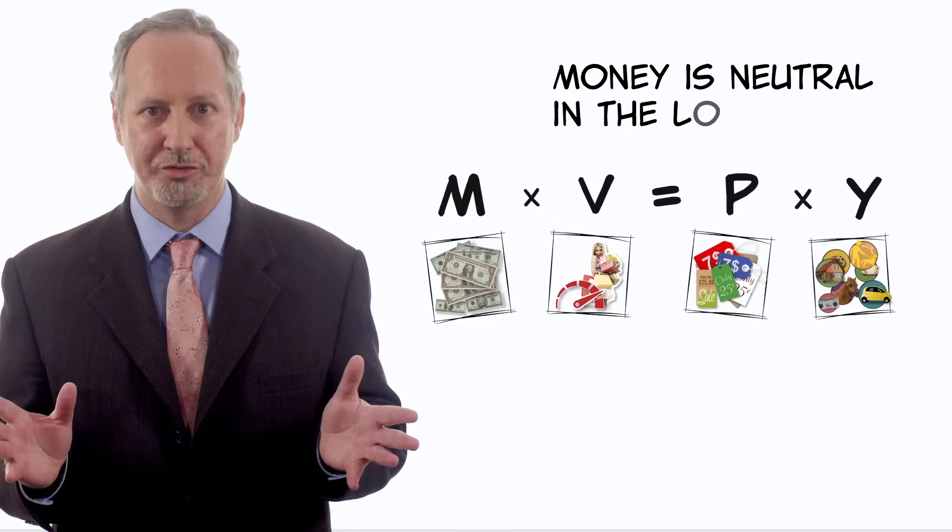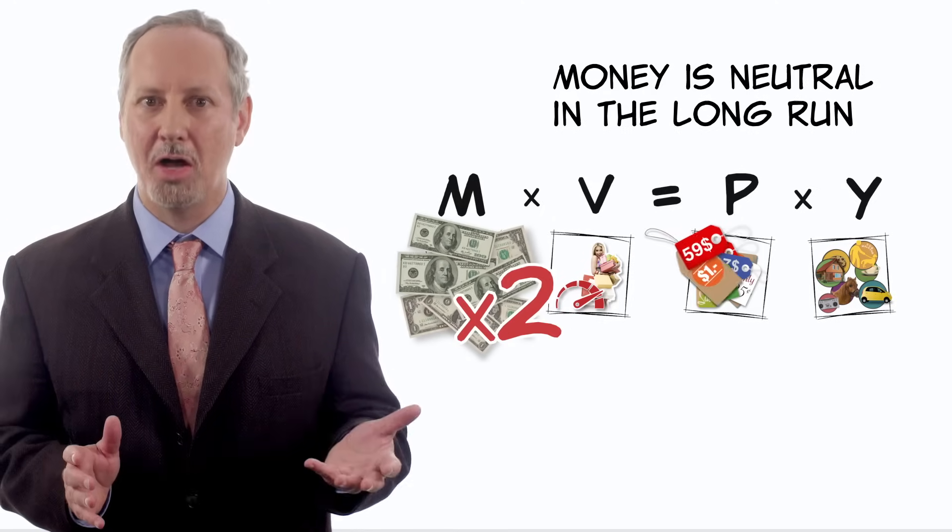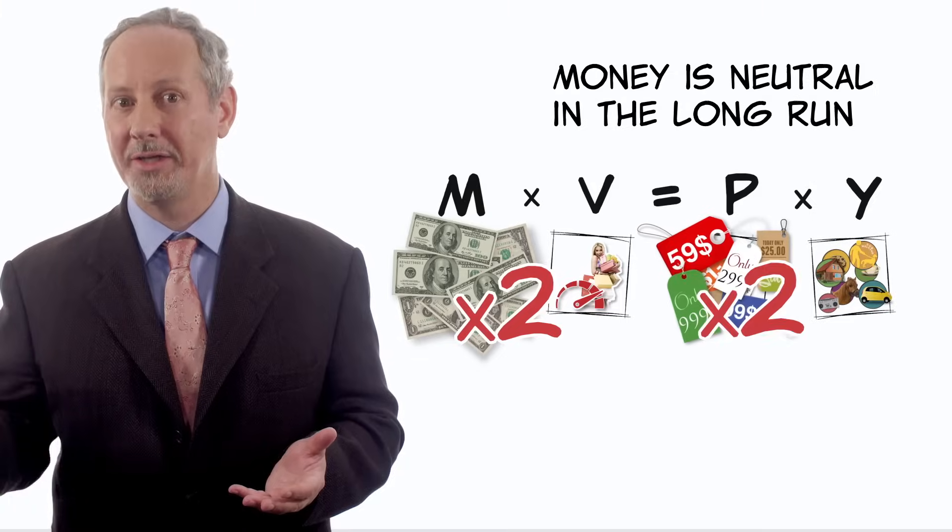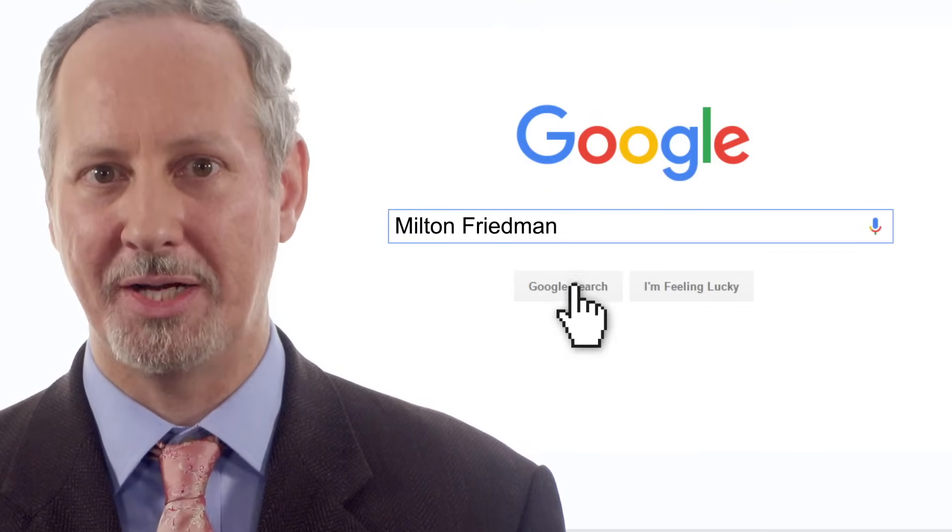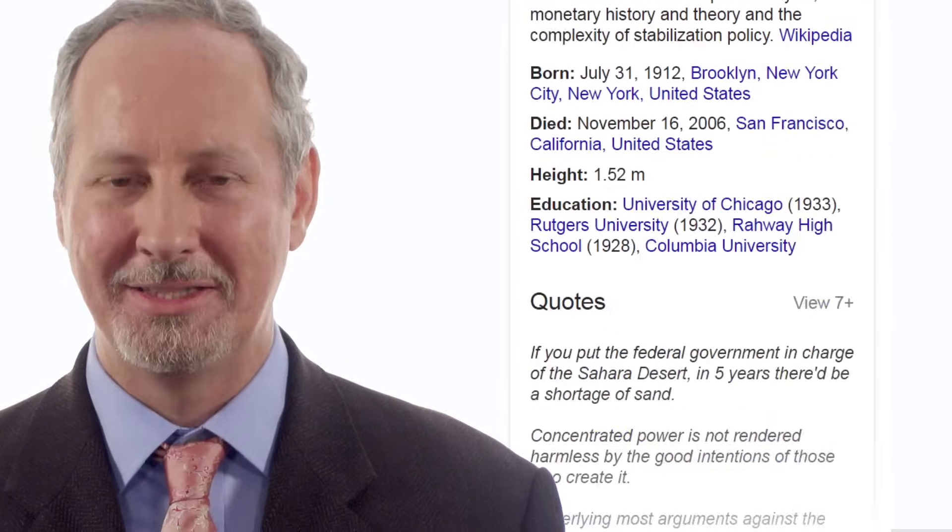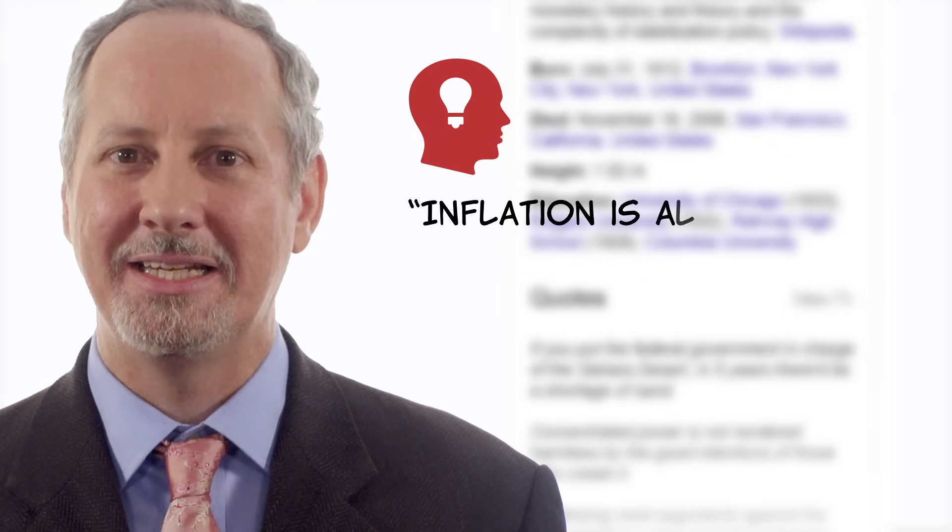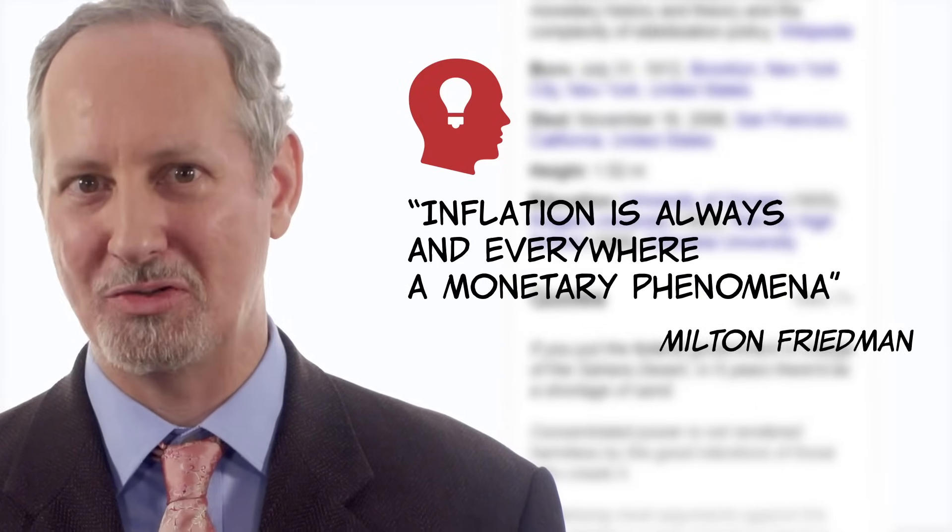Now what this tells us is three very important principles. First, in the long run, money's neutral. A doubling of the money supply will in the long run lead to a doubling of prices. Second, if we're thinking about a significant and sustained inflation rate, then Milton Friedman had it exactly right when he said, quote, Inflation is always and everywhere a monetary phenomena, end quote.